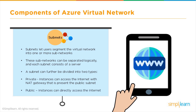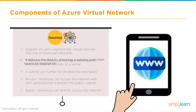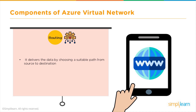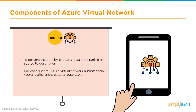Public instances can directly access the internet. The next component is routing. Routing refers to routing rules applied to routers. Since on the cloud we cannot have direct router access, using routing as a component we can define routing rules which are directly applied to the router and infrastructure. It delivers data by choosing a suitable path from source to destination. For each subnet, Azure Virtual Network automatically creates a route table to route traffic, which can be used by every subnet. You can also create multiple route tables associated with different subnets.